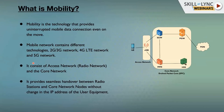Let's start with mobility. In literal terms, mobility means the ability to move. Mobility is the technology that provides uninterrupted mobile data connection even on the move. A mobile network contains different technologies like 2G, 3G, 4G, LTE, and 5G. It has two parts: first is the access network, which is also the radio network, and the second part is the core network. We will try to understand all these entities in detail.